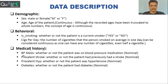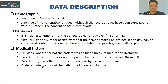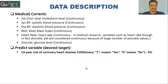Then there are medical history features. 'BP meds' shows whether or not the patient was on blood pressure medication — these are all binary variables. 'Prevalent stroke' shows whether or not the patient had previously had a stroke. 'Prevalent hyp' shows whether the patient was hypertensive, and similarly 'diabetes' shows whether or not the patient had diabetes. Then total cholesterol, systolic BP, diastolic blood pressure, BMI, heart rate, and glucose are all continuous variables representing the current medical details of the patient.